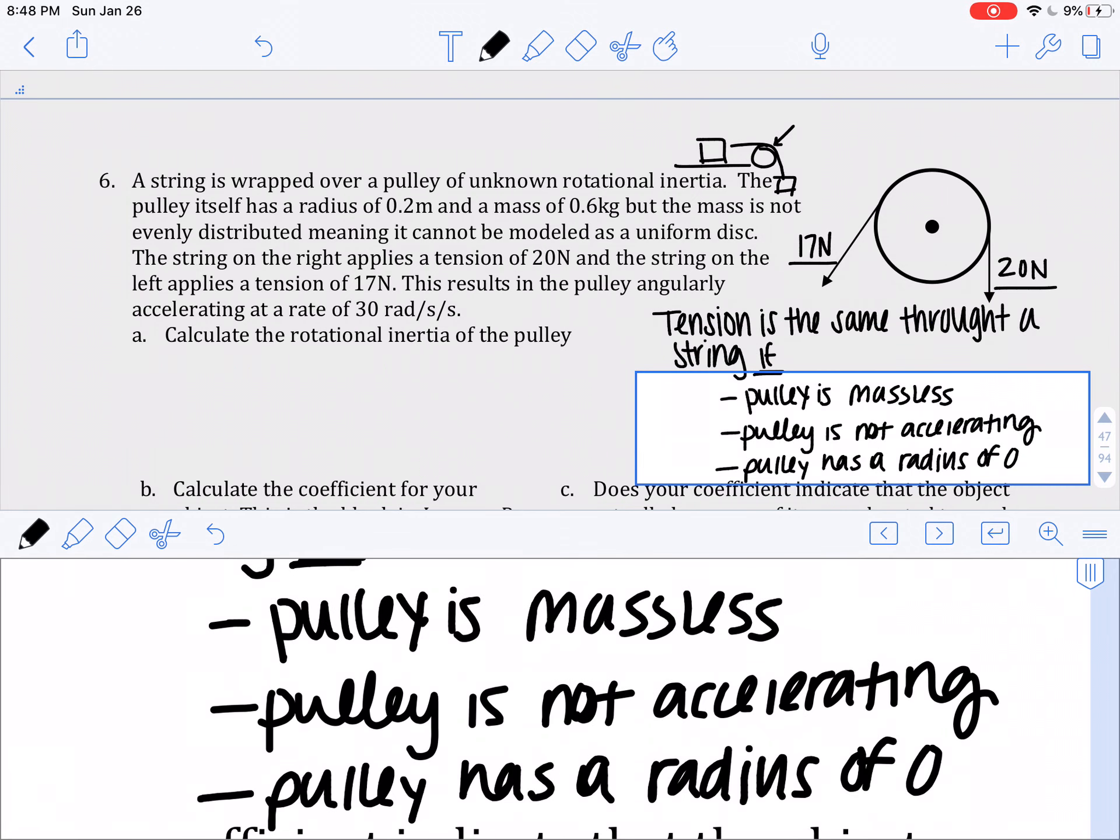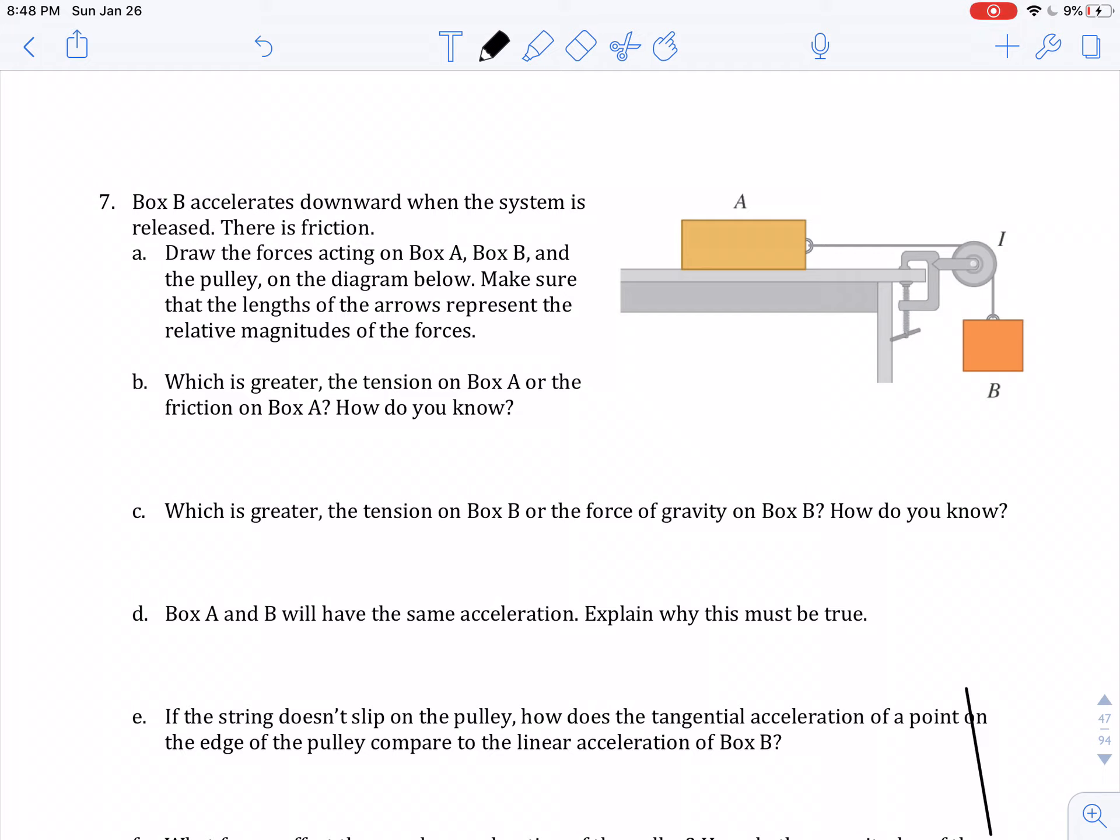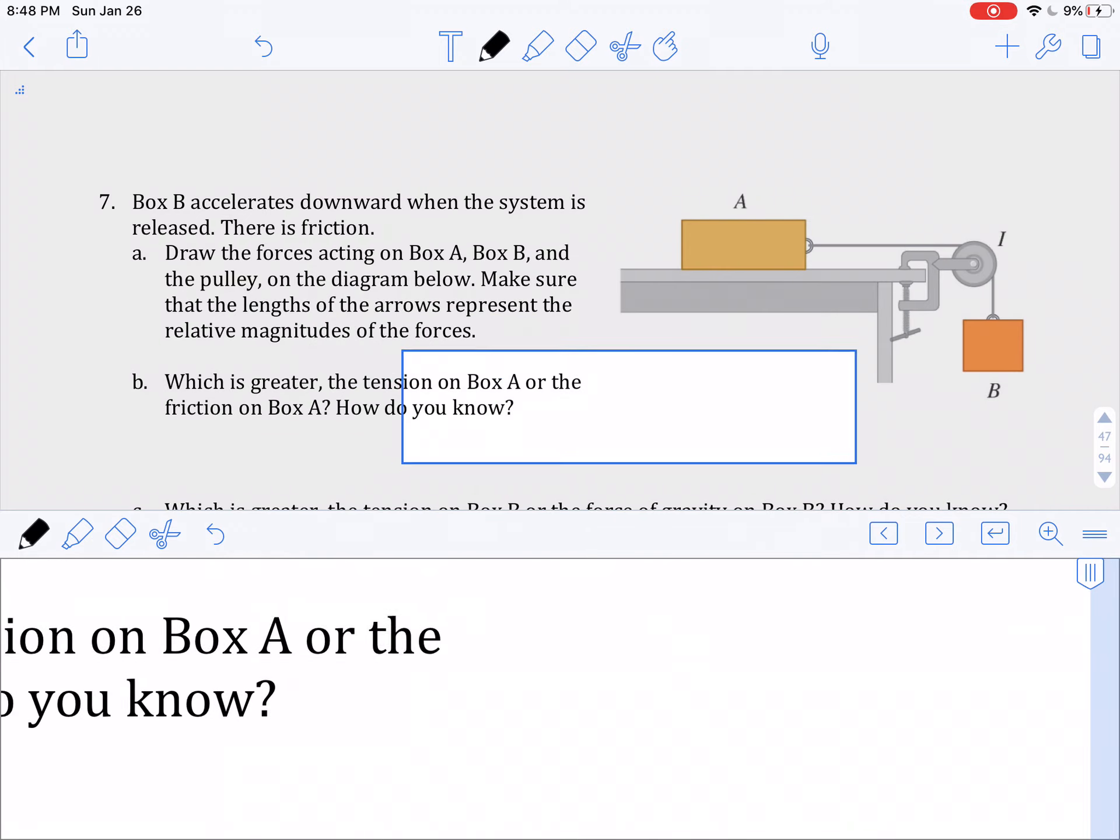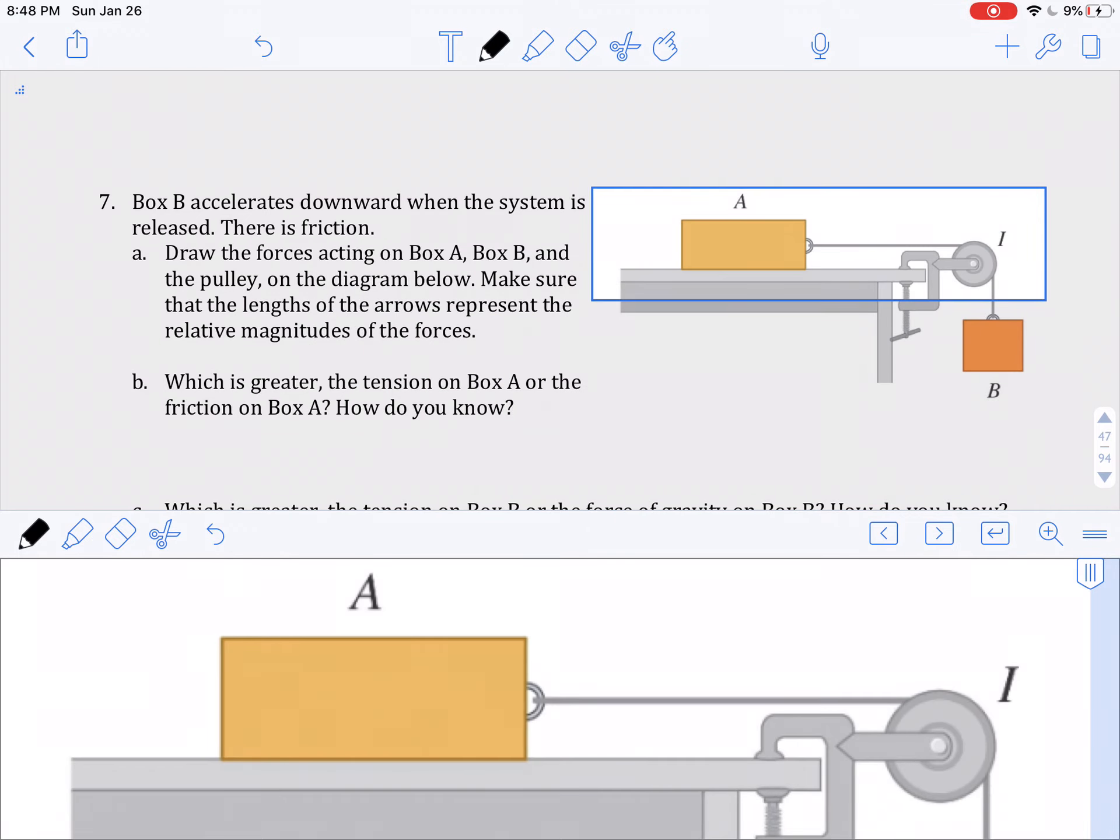So that being said, let's look at this diagram. So there's a bunch of different questions here. And this is a situation where now our pulley is accelerating. So we didn't have a massless pulley. We didn't have a massless string. Now we have more of a realistic system. So if this object is accelerating, let's start by drawing our FBDs.